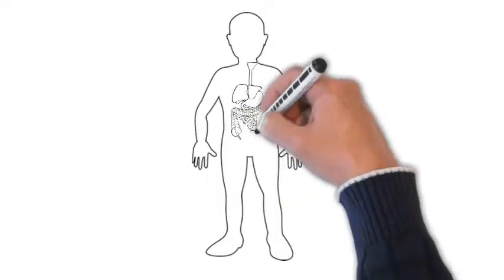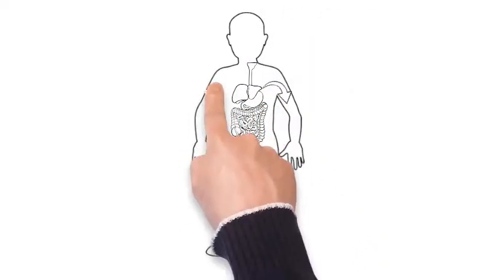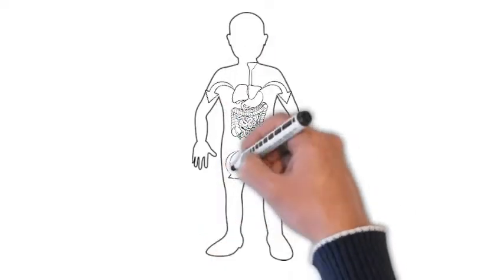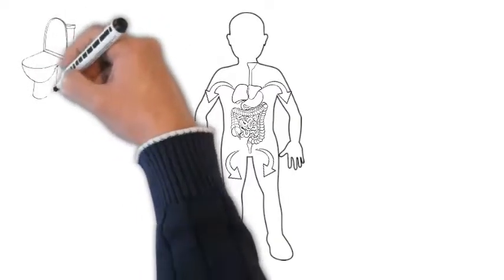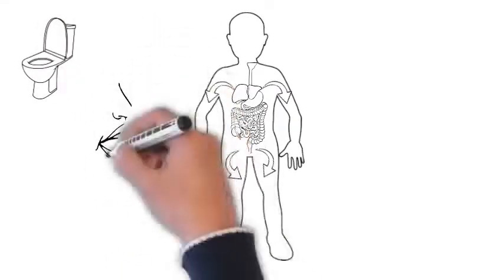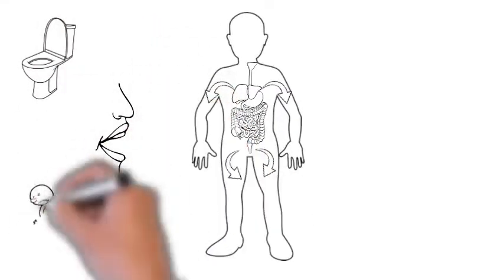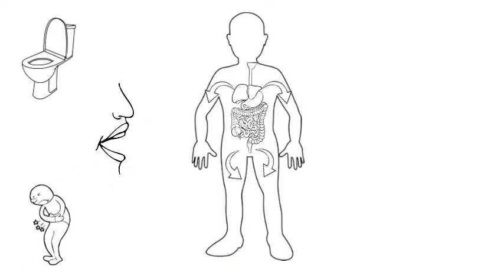As the body prepares for action, blood flow is diverted to the major muscle groups and away from our digestive system. This is why you may feel an urgency to use the restroom in an anxious situation. Dry mouth, along with nausea or upset stomach, are common as well.